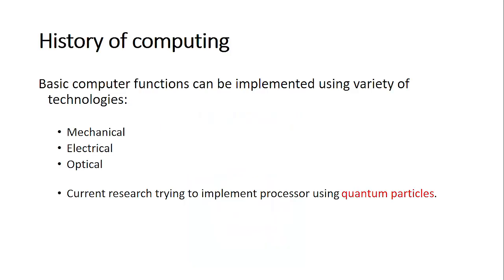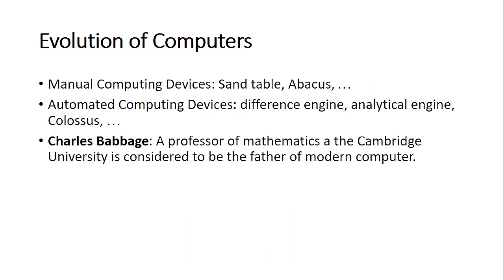Let's have a look at the history of computing. A computer has different functions, and that is what has informed the evolution of computers. We had mechanical computers, electrical computers, and optical computers — these are technologies that computers used to use. Most computers are now operating within the technology known as quantum particles. We have five generations of computers that we are going to look at.